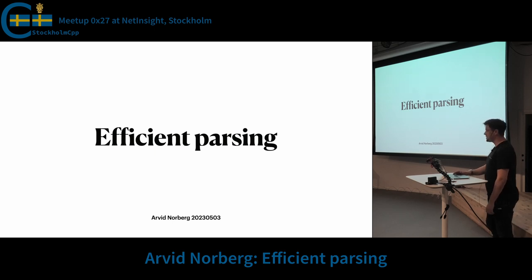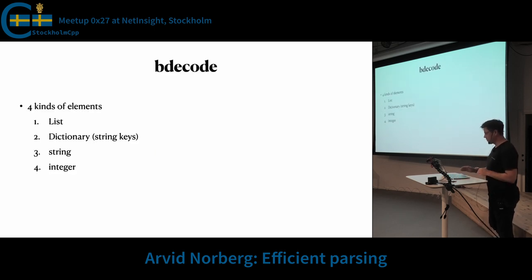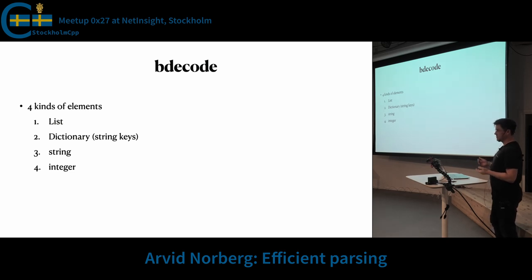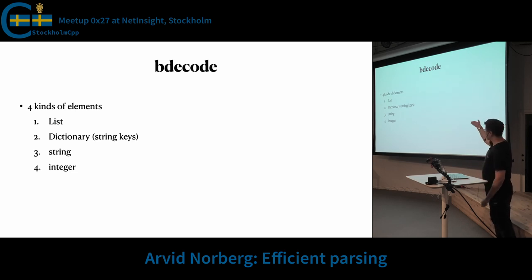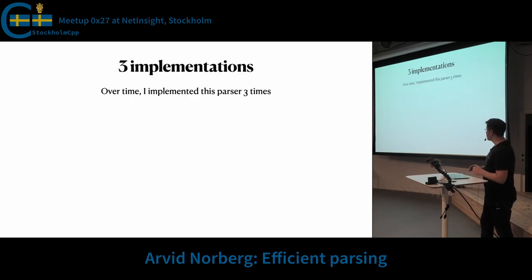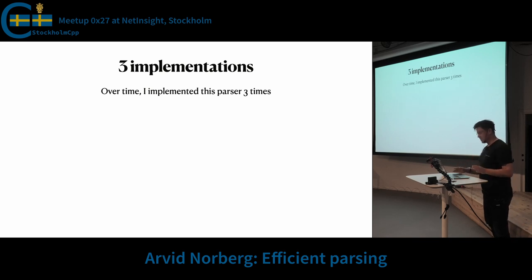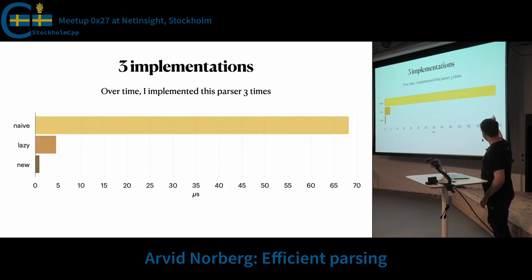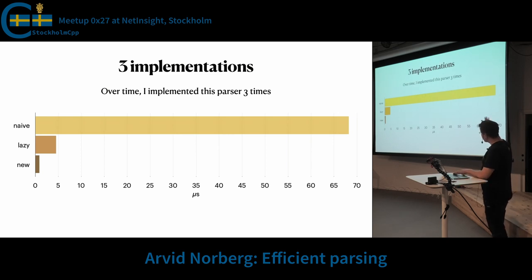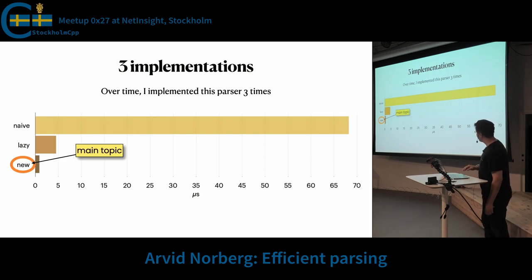This is a brief talk about something I learned a while ago. I was writing a parser for a format that is pretty simple — JSON-like. It has lists, dictionaries, strings, and integers. Over time I ended up implementing this three times. I'm going to start with my punchline: this is the performance of them in order of implementation. I'll briefly go through the two top ones, but the new parser is going to be the main topic.